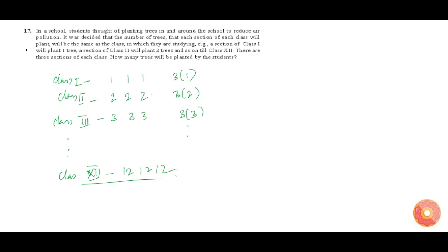Now we need to find how many trees will be planted by the students, which is nothing but the sum of these numbers. This equals 3 into 1 plus 3 into 2 plus 3 into 3, and so on till 3 into 12.